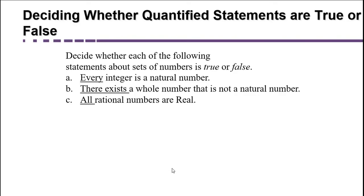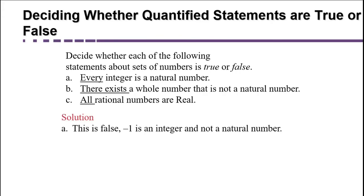Part A: Every integer is a natural number. When we say 'every,' we mean every — so if there's even one integer that's not a natural number, the statement is false. Can you think of an integer that's not a natural number? Any negative number, for example. So this is false, and we justify it: negative one is an integer but it is not a natural number.